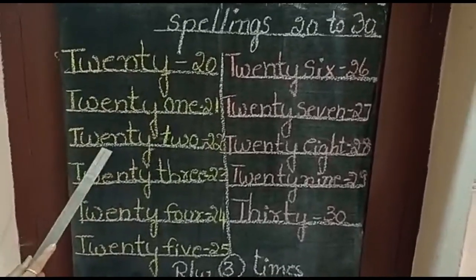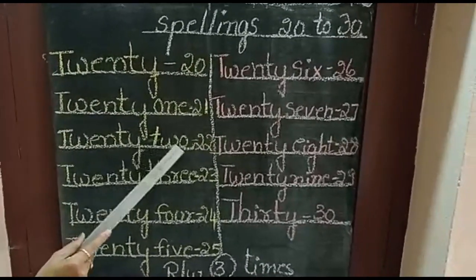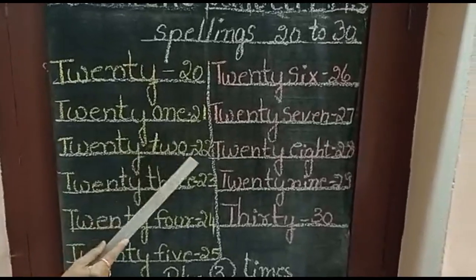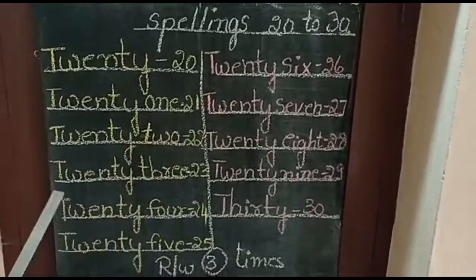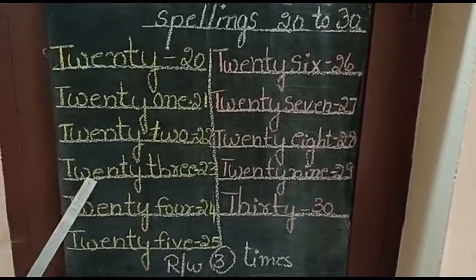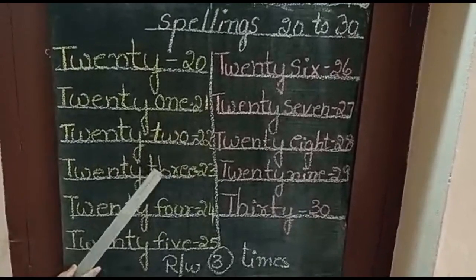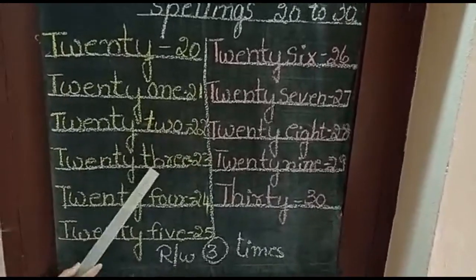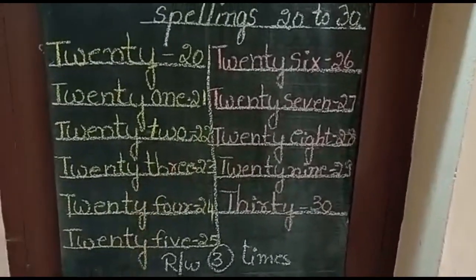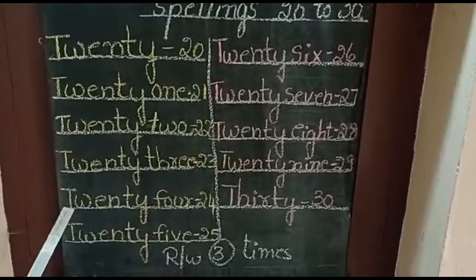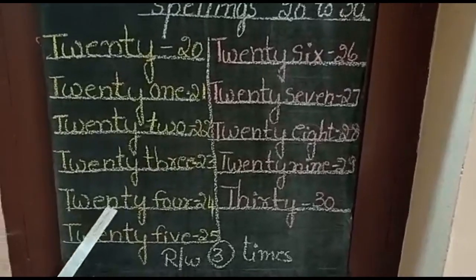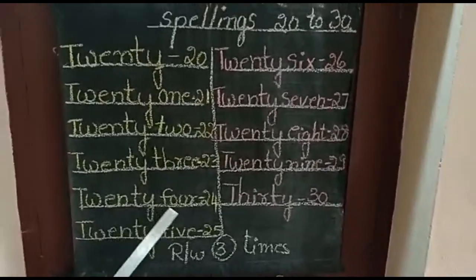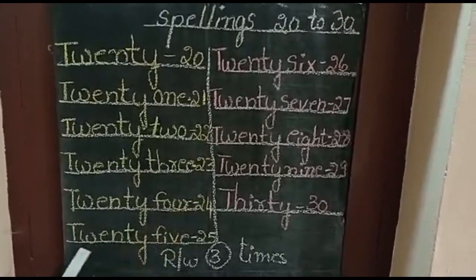T-W-E-N-T-Y T-W-O, 22. 2-2, 22. T-W-E-N-T-Y T-H-R-E-E, 23. 2-3, 23. T-W-E-N-T-Y F-O-U-R, 24. 2-4, 24.